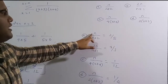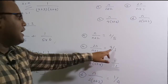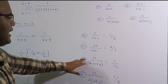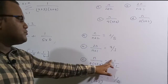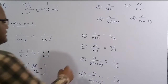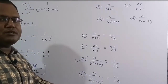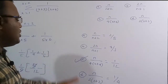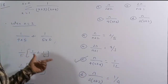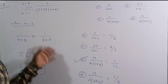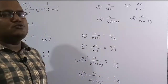Checking the options with n = 2: Option A: n/(n+2) = 2/5; Option B: 2n/(n+1) = 4/3; Option C: n/[4(n+4)] = 2/24 = 1/12 ✓; Option D: n/[2(n+2)] = 1/4. Only Option C gives 1/12, confirming it is the correct solution.